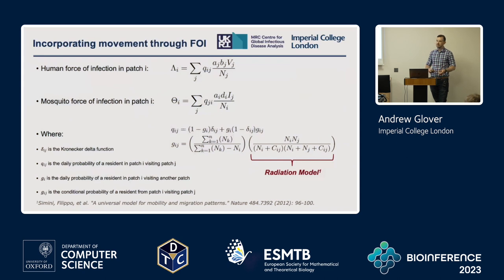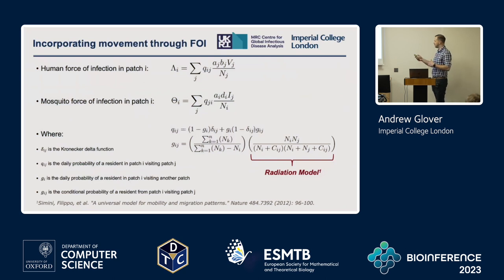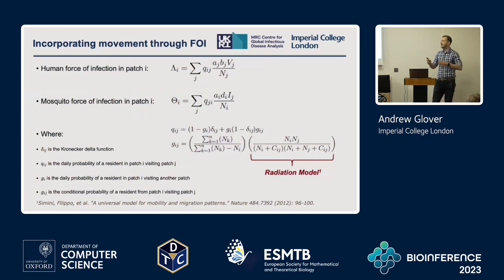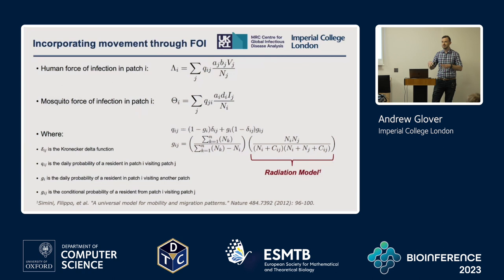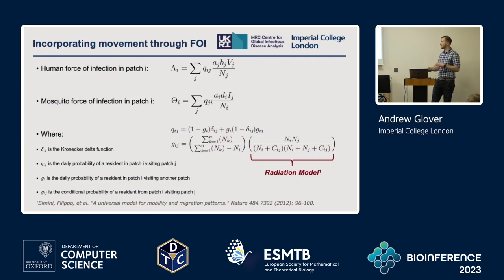I don't explicitly model human movement in the model; it's implicitly accounted for through the force of infection term — the rate at which individuals become infectious. There's a component for when j equals i, encompassing the local force of infection, but the summation also accounts for imported cases from connections with other patches. This applies to both the human and mosquito force of infection: the human term is due to susceptible individuals being infected in other patches, whereas the mosquito term is due to infectious individuals visiting the host patch.